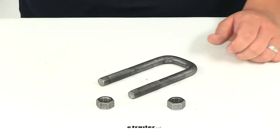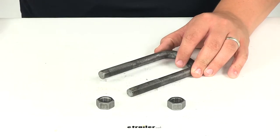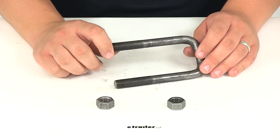Today we'll be reviewing part number 175130. This is Redline's replacement U-bolt with the included nuts for one and three quarter inch wide square trailer axles.